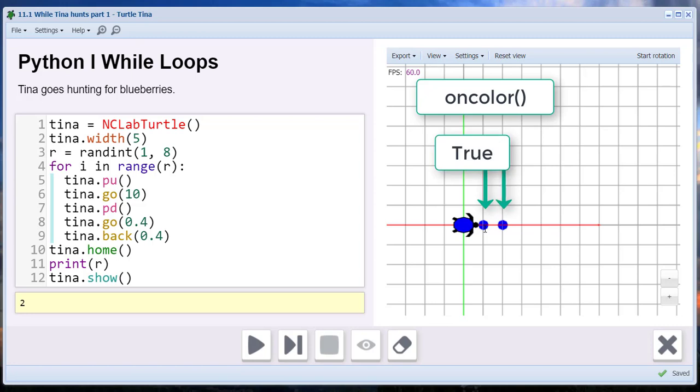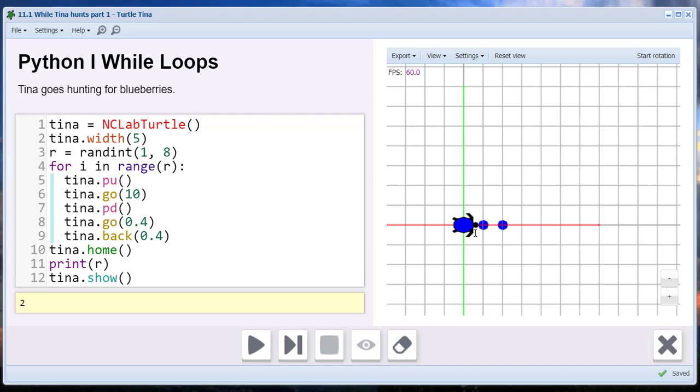she will carry out the steps in the loop. If not, false, she will exit the loop. Tina doesn't need to draw, so we'll keep her pen up. In fact, our loop won't work if her pen is down, as we will see.